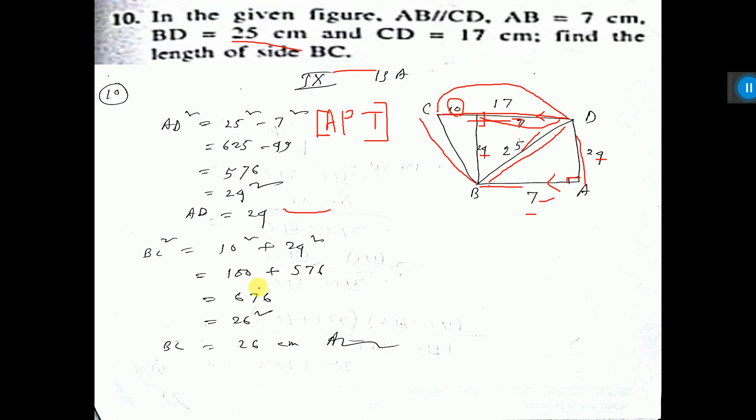Now, to apply BC square equal to—here, BC square equal to, this is right angle triangle—so 24 square plus 10 square. That is 24 square plus 10 square.